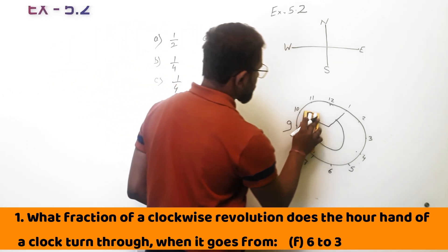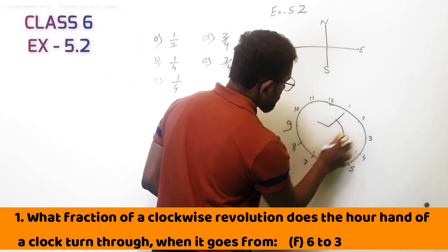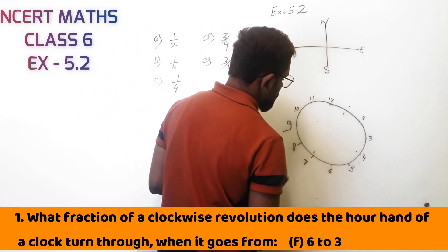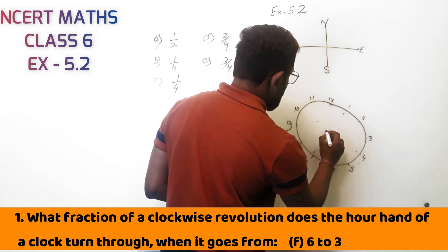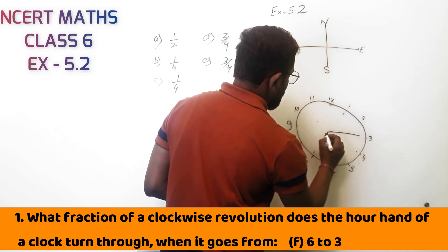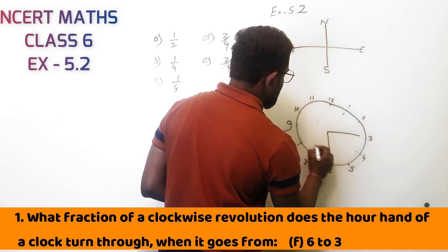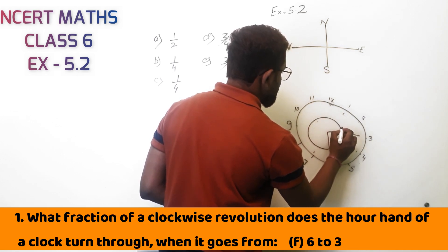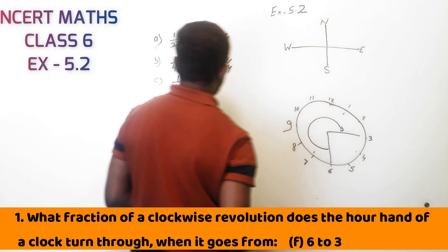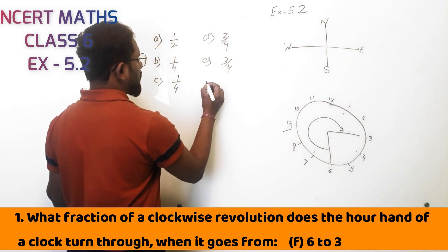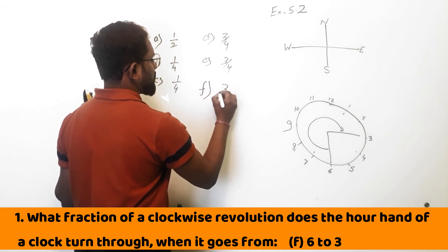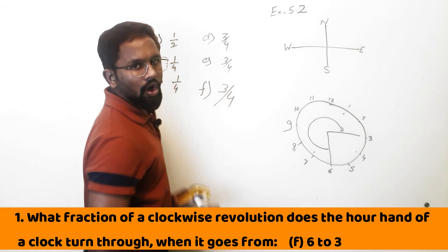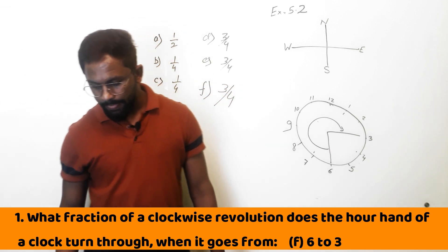6 to 3: starting from 6 and going to 3 in the clockwise direction, so it is again 3 by 4 of the revolution.